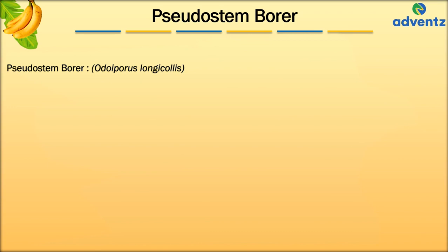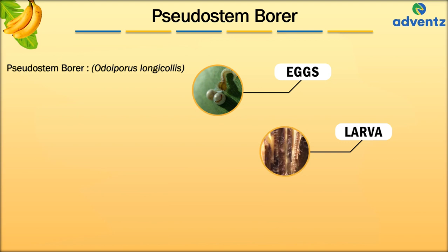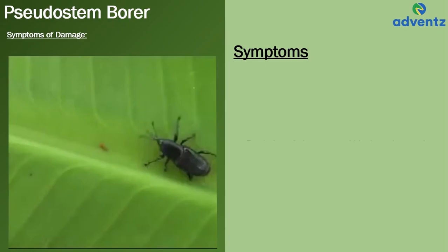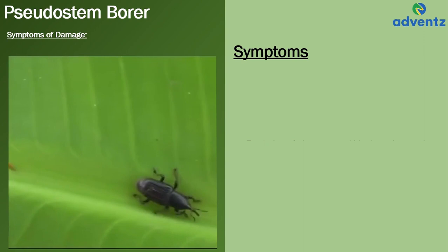Let us begin by understanding Pseudostem Borer, also known as Odiiporus longicollis. Pseudostem Borer follows a life cycle of forming as an egg, converting into larva, from larva into a pupa, and finally growing into an adult. These images show the impact of Pseudostem Borer on a banana plant.